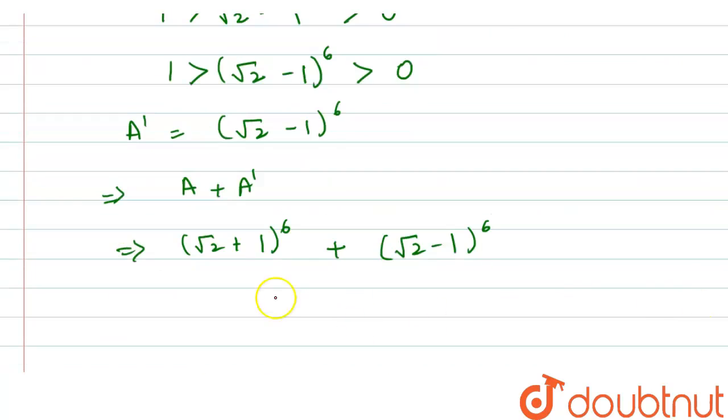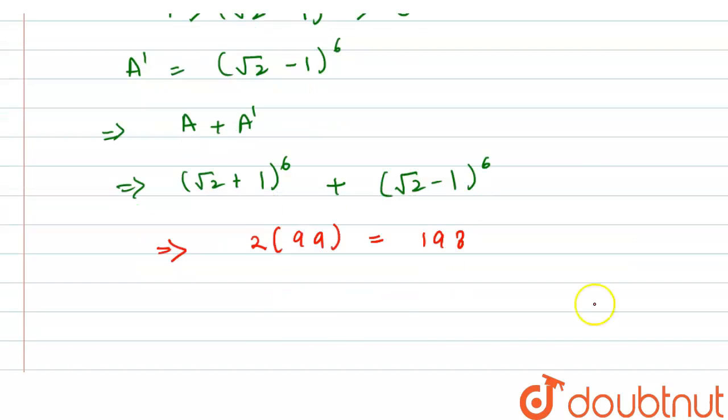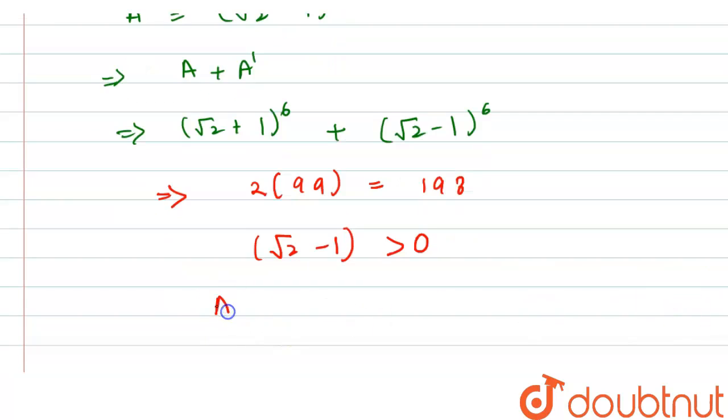Then according to that, our equation we get as 2 × 99 = 198, where √2 - 1 is greater than 0. So here in this equation a + a' will be equal to 198.